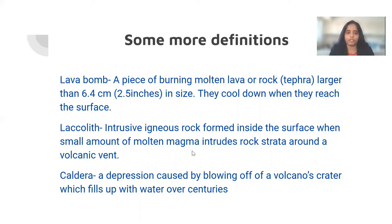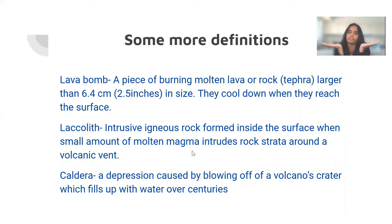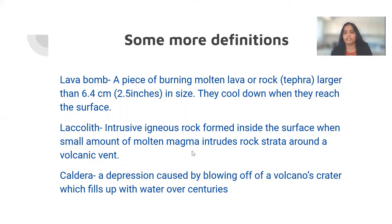Caldera is also an important definition. It is a depression caused by the blowing off of a volcanic crater, which fills up with water over centuries. When there is a massive volcanic eruption, the whole mouth of the volcano is blown up and a large depression is formed. We call it a caldera. When the volcano is dormant or extinct and no more active, the caldera cools down, fills with rainwater, and forms a very beautiful lake or pond — often a tourist attraction.